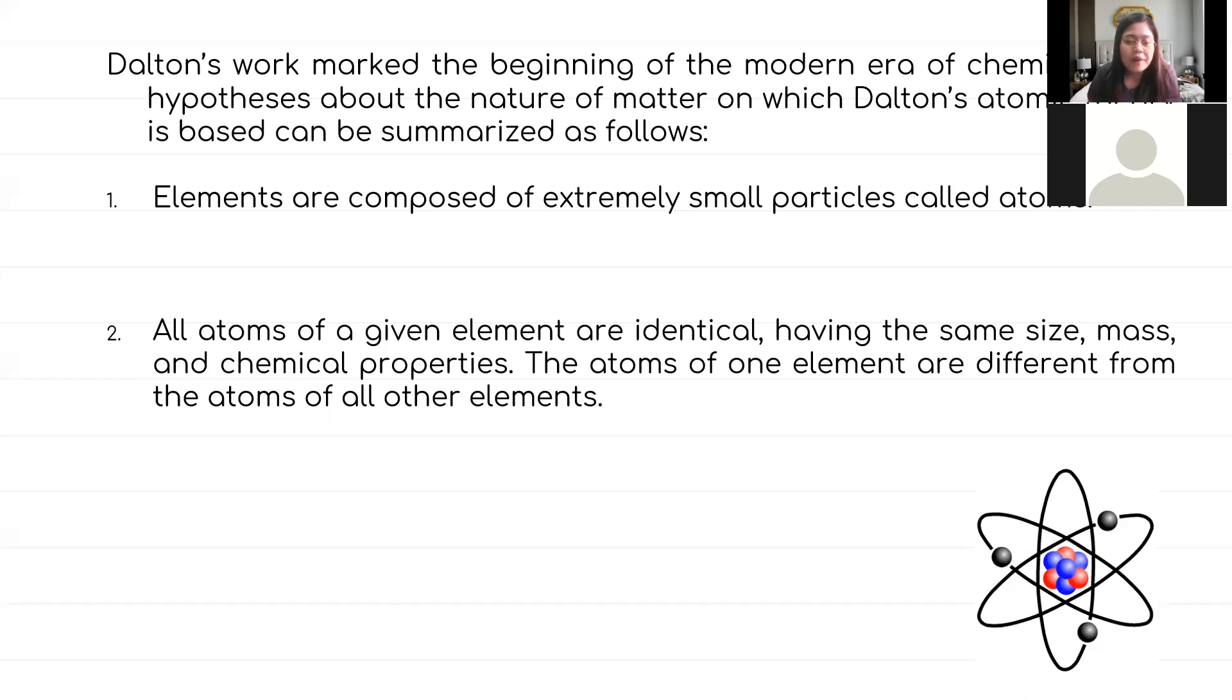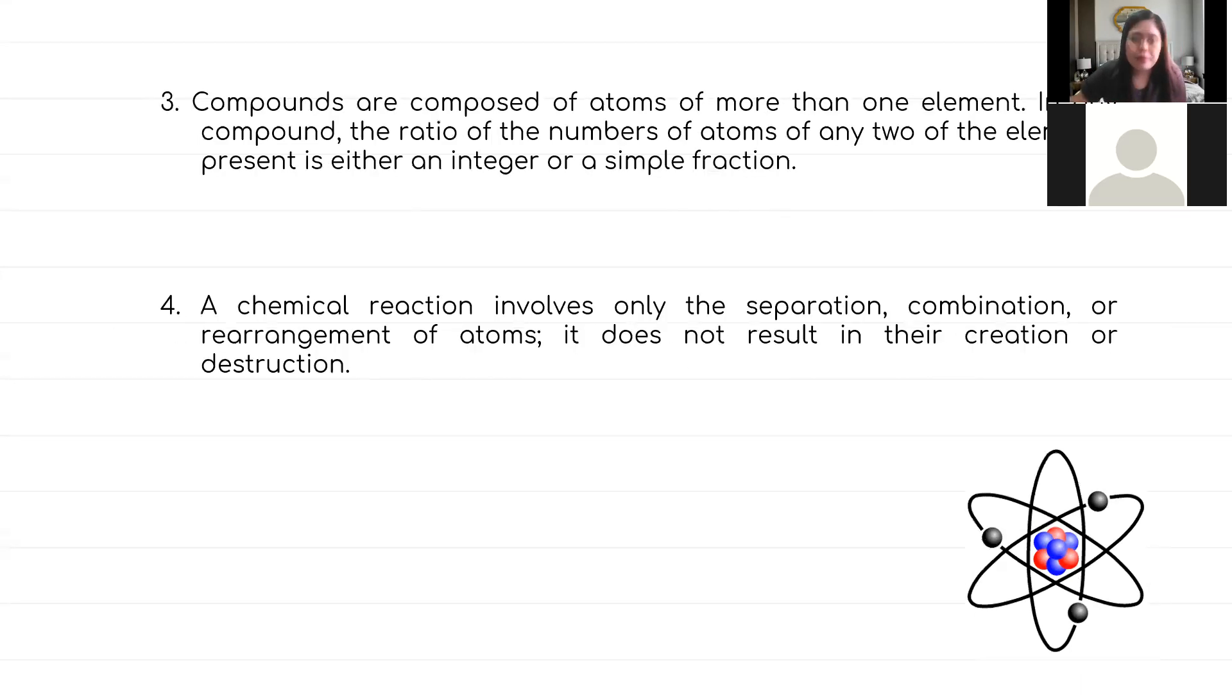Therefore, the atom of one element is actually different from all the other elements. The atom of hydrogen is different from the atom of helium. But if you say hydrogen, all are the same atoms, same size, same mass, and even their chemical properties.